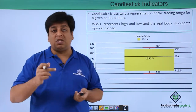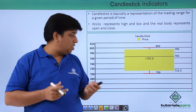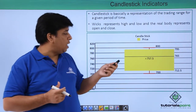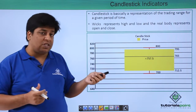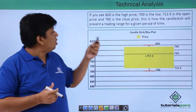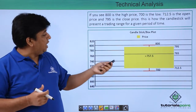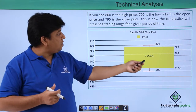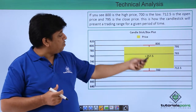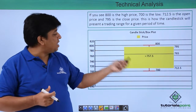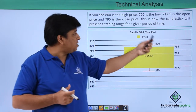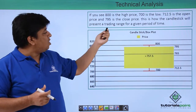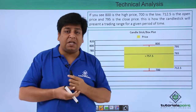You can see the volatility of the stock over this period. We also see what is the open, the close, and the average. For example, 800 rupees is the highest, 700 is the lowest, 712.5 is the open price, and 795 is the close price. This is how a candlestick represents a trading range for a given period of time.